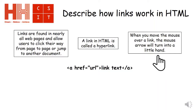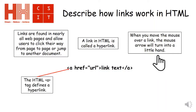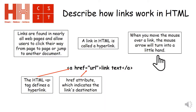This is what the code is going to look like in HTML. Starting with the first part, the HTML tag defines a hyperlink. The href attribute indicates the destination — the web address we're going to go to, or the website we're going to go to.